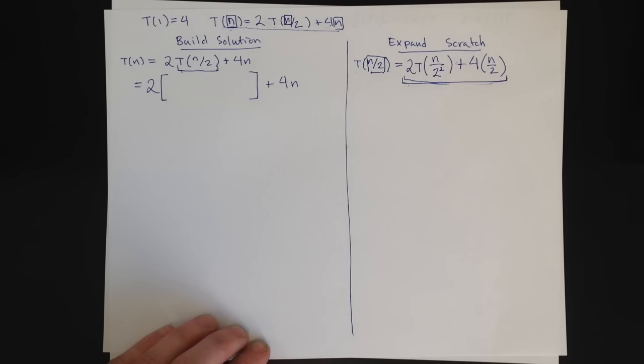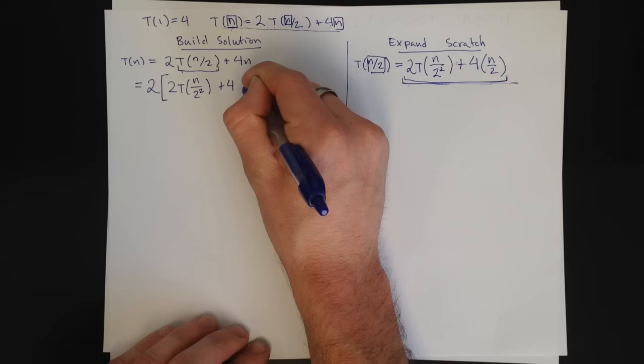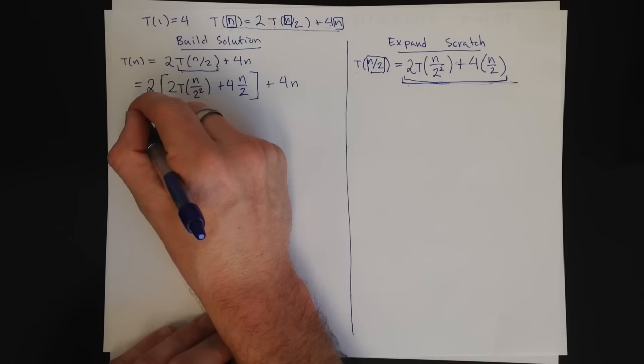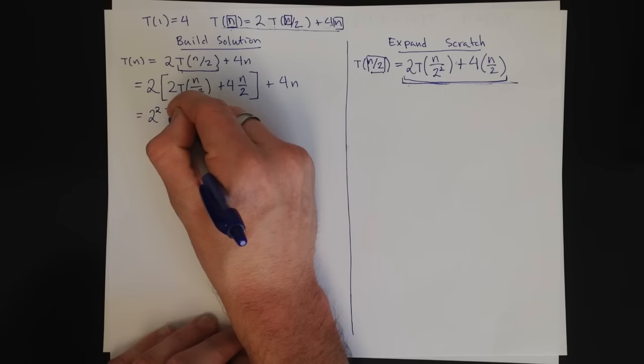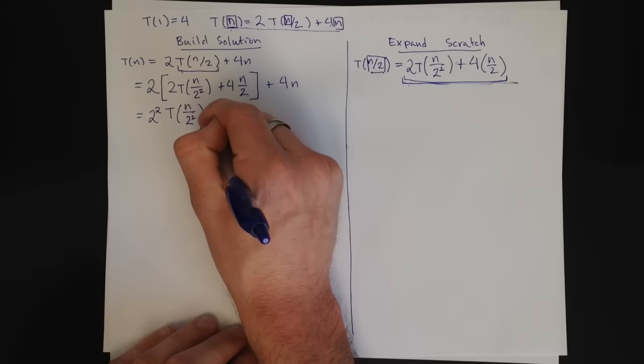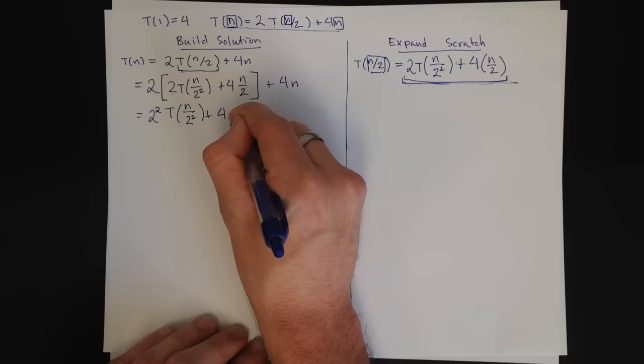So far so good. Now, what goes in here is exactly this: 2T(n/2²) + 4n/2. And then the next step is to go ahead and multiply through. So this becomes 2². By the way, I also like keeping things in terms of powers because I keep repeating these operations. So things tend to turn into powers. So instead of saying 4, it's better to say 2². 2² plus, and now notice when I multiply this 2 times 4n/2, the 2s cancel. So I just get 4n + 4n.